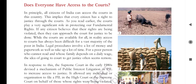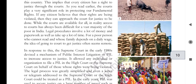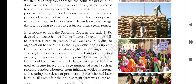However, some legal procedures involve a lot of money and paperwork, and also take up a lot of time. For a poor person who cannot read and whose family depends on daily wages, going to court to get justice often seems remote. So for these kinds of people, in 1980, the Supreme Court devised a mechanism of Public Interest Litigation, meaning PIL, to increase access to justice.